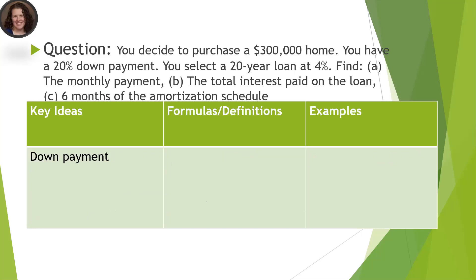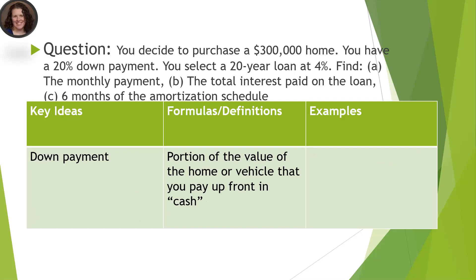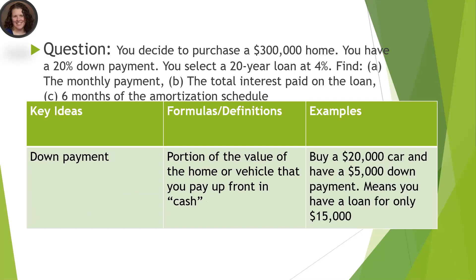Let's start by talking about what a down payment is. It's a portion of the value of the home or the vehicle that you pay up front in cash — meaning you have that money in your bank account and you give it to the seller at the same time that you give them the money from the loan. For example, if you buy a $20,000 car and you have $5,000 for a down payment, you only need to borrow $15,000 from the bank, because $5,000 plus $15,000 gives you the whole purchase price. It's showing that you're invested in it — you're putting some of your own cash down, and so the bank is more willing to lend you the money.